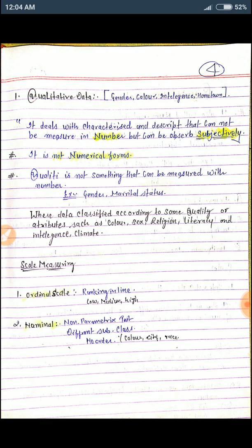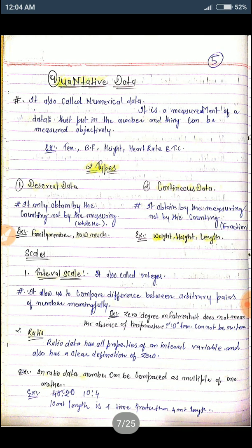Qualitative data measures number but of your subjectively. It's not in numerical form. Skills of measure: ordinal and nominal. Ordinal means ranking in line. Nominal is the parameter test, example difference of class, color, cities. And quantitative, it means the numerical form of data. Example: temperatures, height, heart rate. It has two types: discrete data and continuous data. Discrete data is obtained only by counting, not by measuring. Continuous data is obtained by measuring, not by counting. Discrete data example: family members. Continuous data: weight, height, and length.